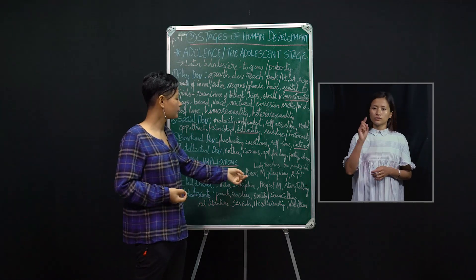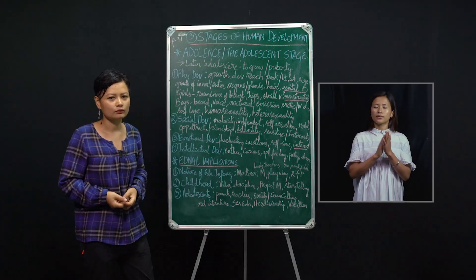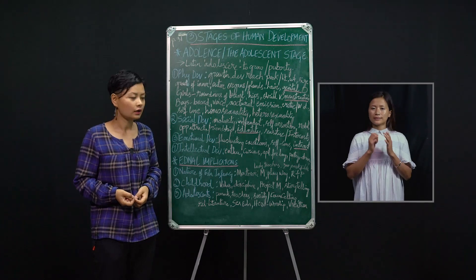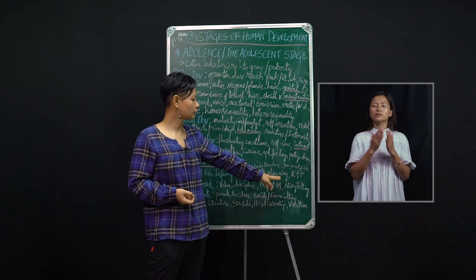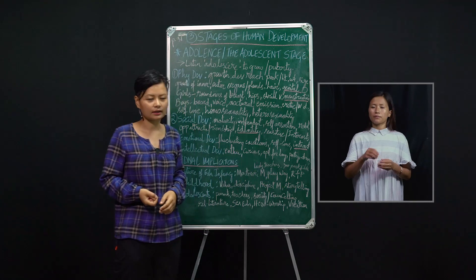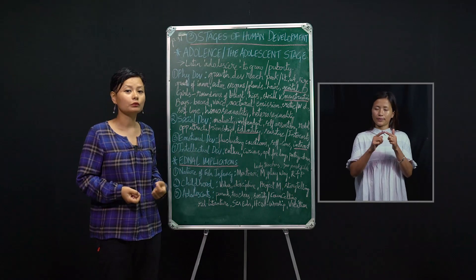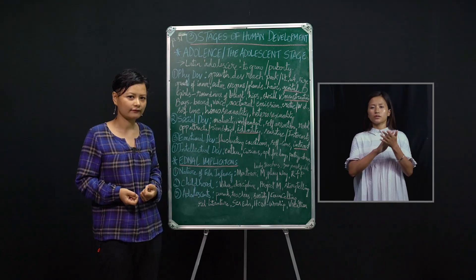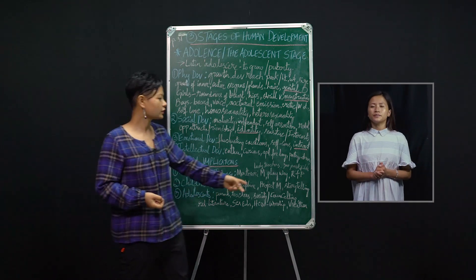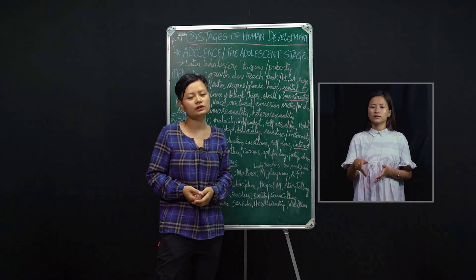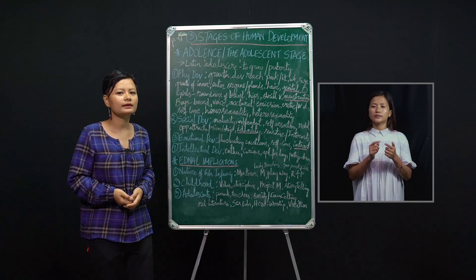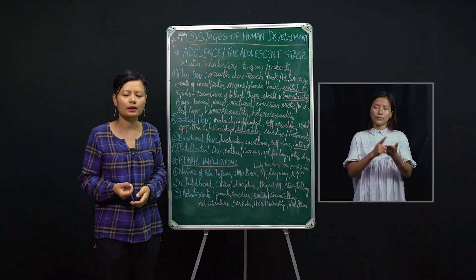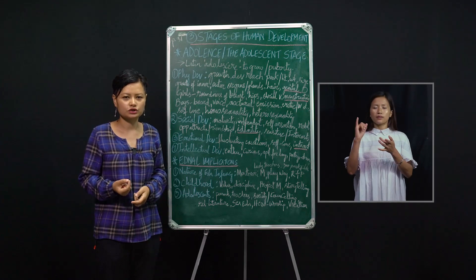One method is the Montessori method. If you have small children at home, they go to play school and learn through the play-way method — that is the Montessori method of teaching small infants. Under educational implications, there should also be some kind of reward and punishment — not at the extreme level, but mild reward and punishment.